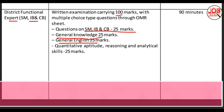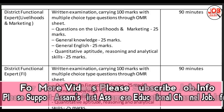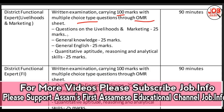Next is District Functional Expert Livelihood and Marketing. This functional expert post has both types of process. The syllabus covers livelihood and marketing subject for 25 marks. General Knowledge is 25 marks. General English is 25 marks. Quantitative Aptitude, Reasoning and Analytical Skill is 25 marks.